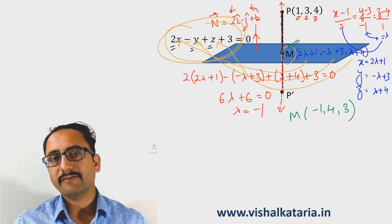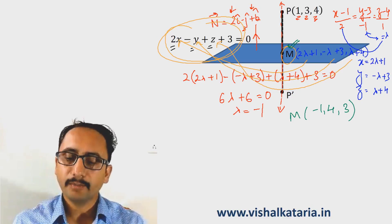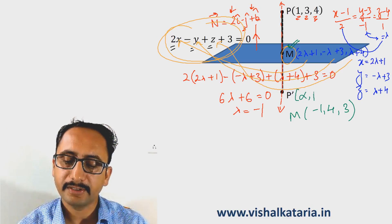P' is left to find, and we know that M is the midpoint of P and P'. Using the midpoint formula, if coordinates of P' are (α, β, γ),